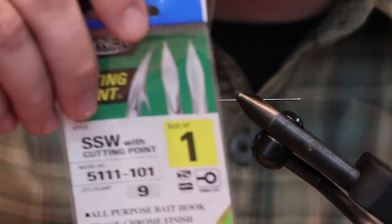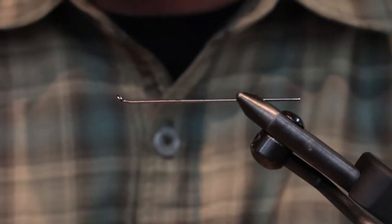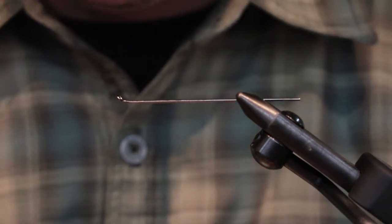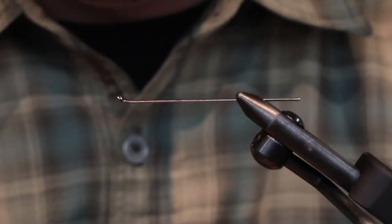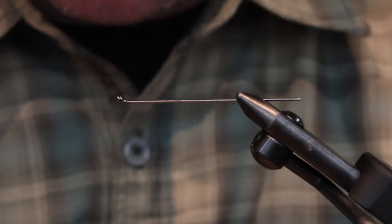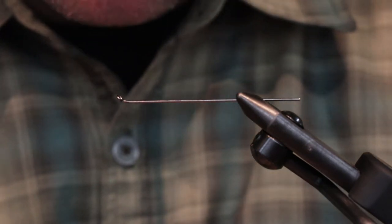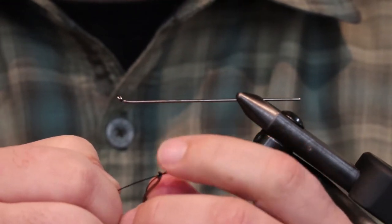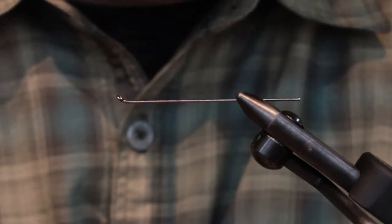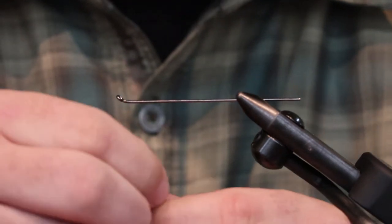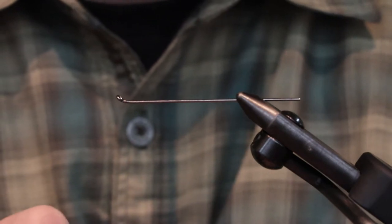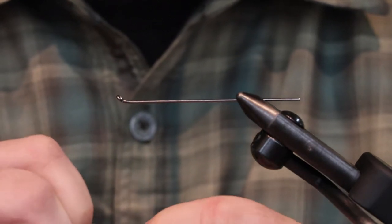I'm using a size one Owner SSW. The best way to do it is to go ahead and throw the hook on, string the intruder wire through it, pull the hook through nice and evenly with the intruder wire, and you can see it's basically even here. That way you have a really good idea as to where your hook's going to sit.